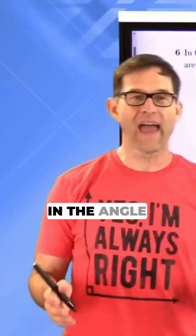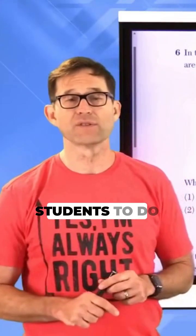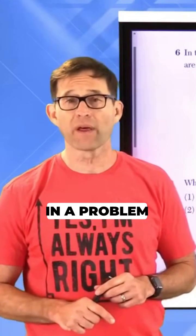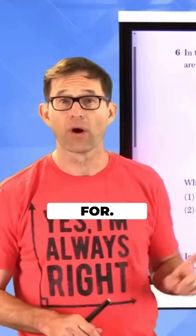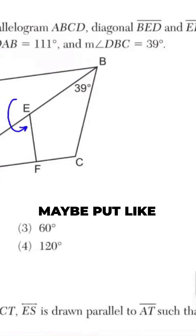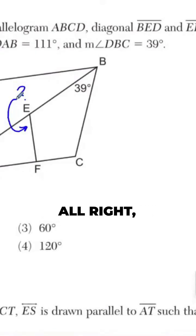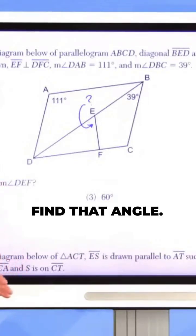This is what I would call a fill-in-the-angle problem. The first thing I always advise students to do in a problem like this is make sure they know which angle they're looking for. I'm trying to figure out the measure of angle DEF, so I'm going to put a little arrow there and a question mark. Let me move that little weird icon off of there. So we want to find that angle.